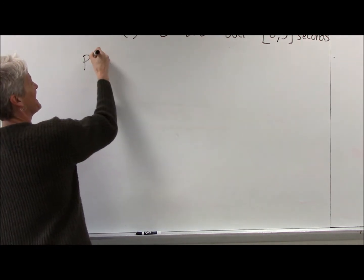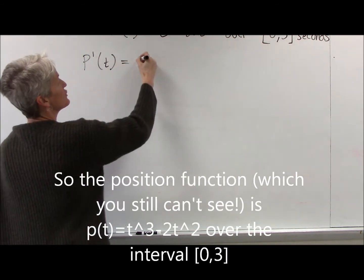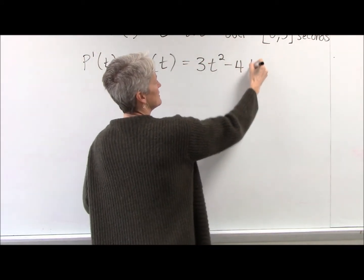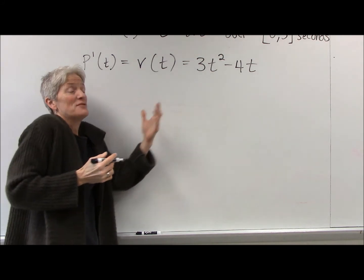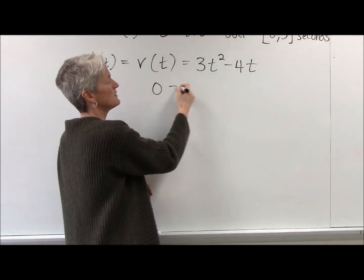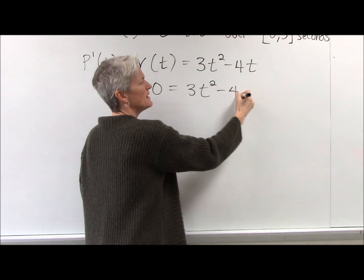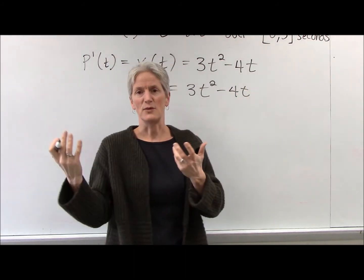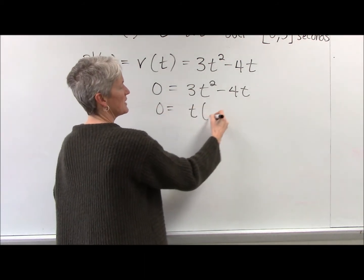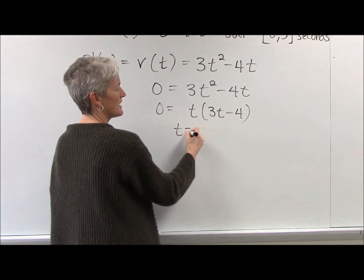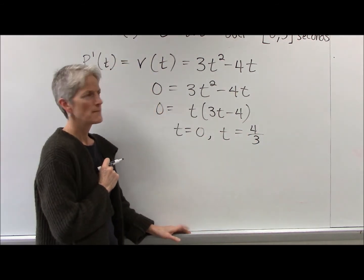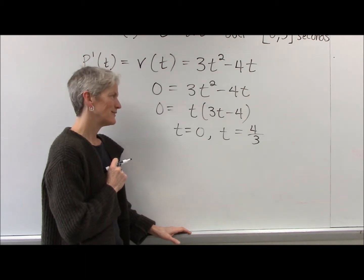Let's take the first derivative of that position function, and we're going to call that velocity. We're experts at this now. If I want to know when the velocity is positive and negative, maybe I want to find critical points. Let's set this equal to zero, and that way I can see when the particle is at rest, when it's moving positive, when it's moving negative. I'm finding my critical points — I'm just going to factor out a T. It looks like I have critical points at time equals zero and time equals four-thirds. So these are places where the velocity is zero.